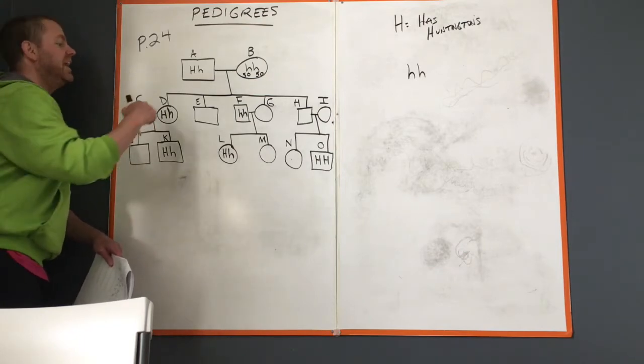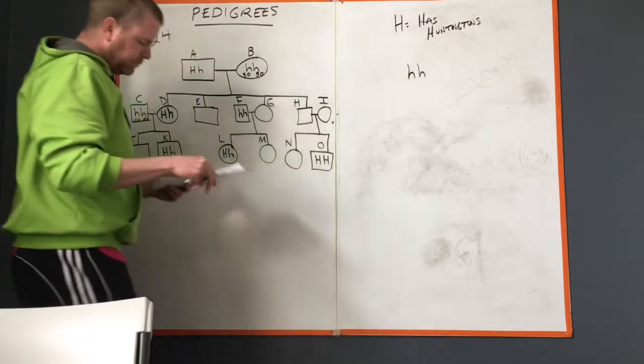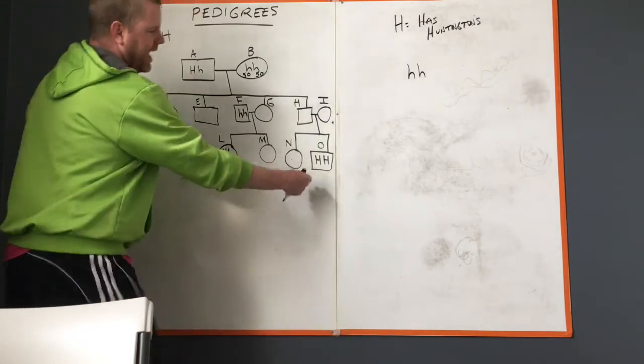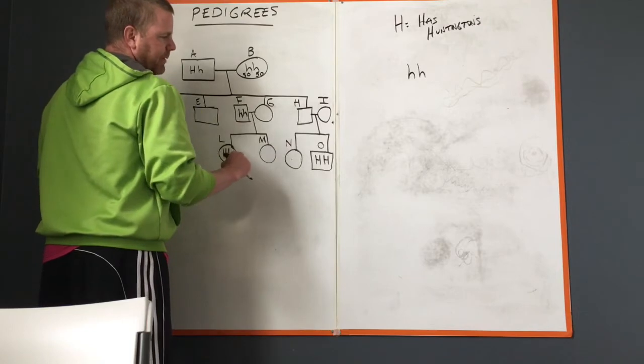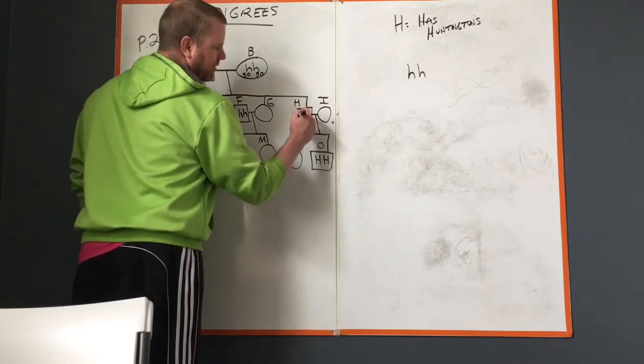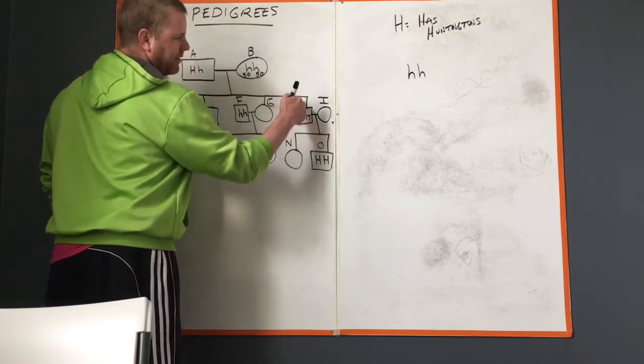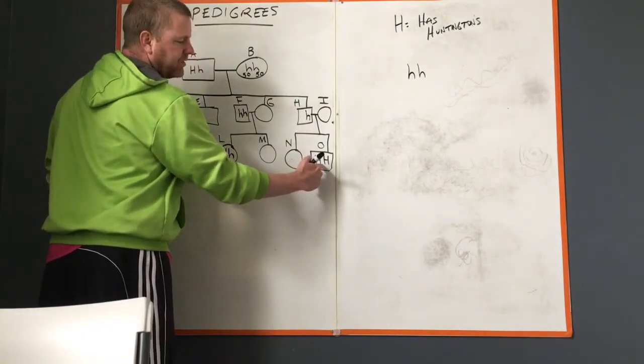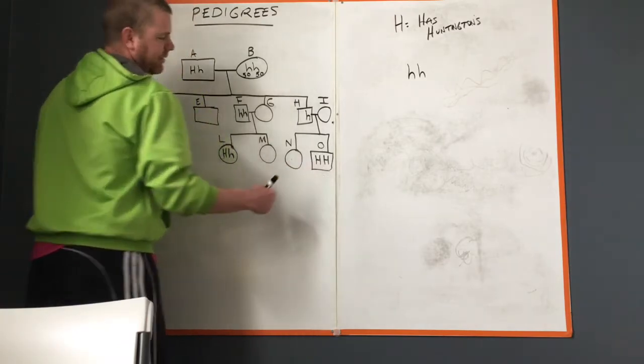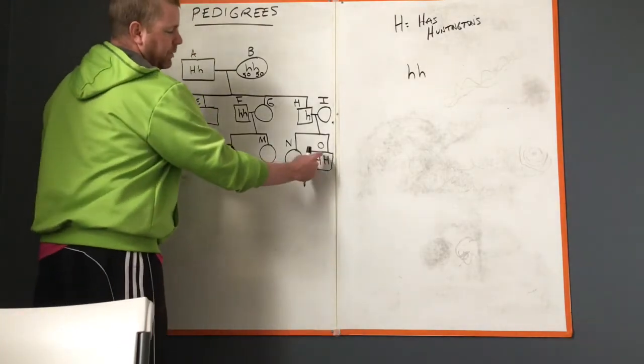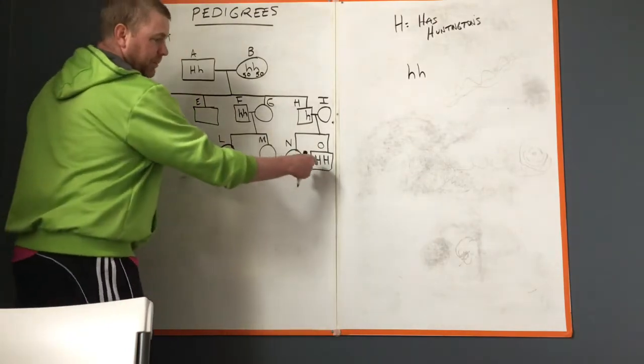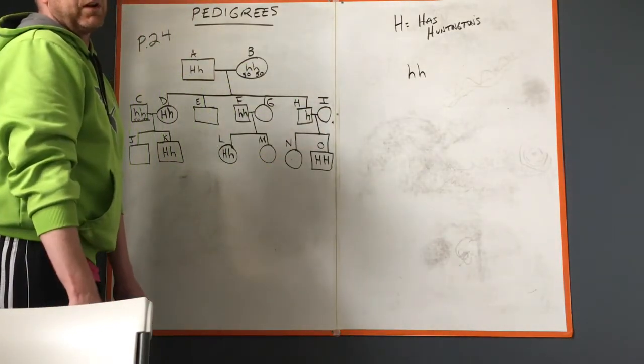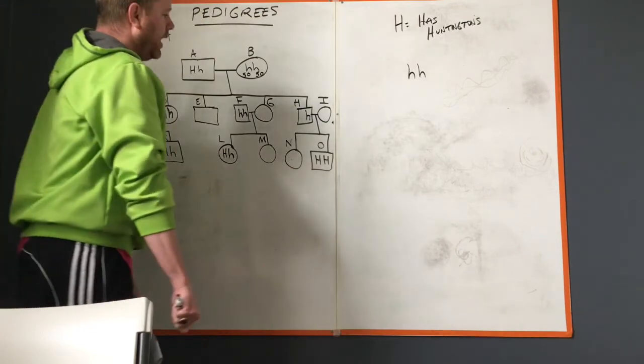What are the probable genotypes of H and I? With H, we end up having at least a little h because that's the son of this lady right there. Now they have a kid who's homozygous dominant, which is rather unfortunate for the next generation because 100 percent of the time person O is going to give a big H, and it's dominant. Every single time, his kids are going to have Huntington's.